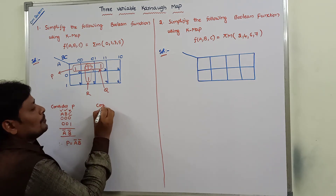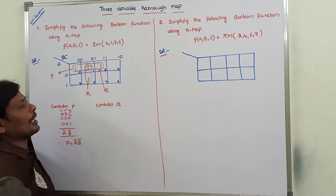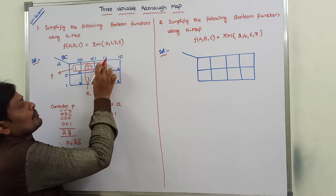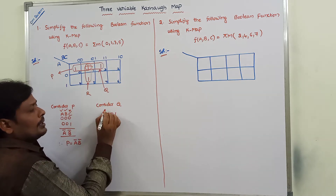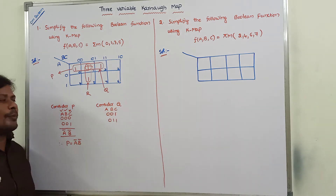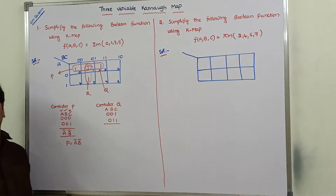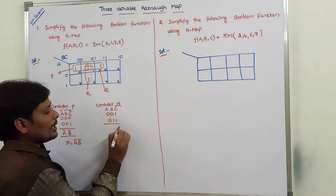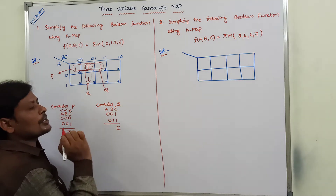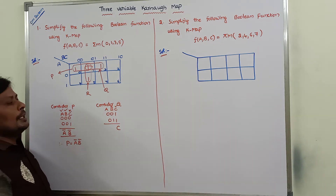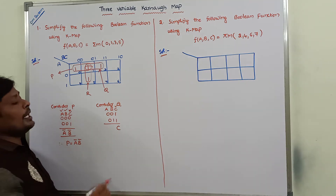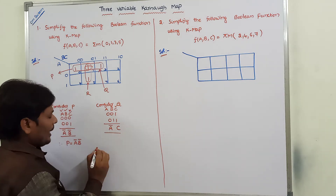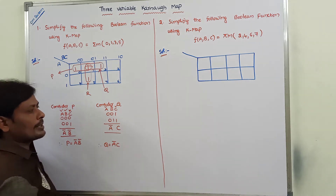Consider pair Q. This cell is 001 and this cell is 011 — variable A, variable B, variable C. Under the C column, it contains only 1s, so we consider it — C value 1 means C. Under the B column, it contains a combination of 0s and 1s, so we ignore it. Under the A column, only 0s are there — A value 0 means A-bar. Therefore, Q = A-bar · C.